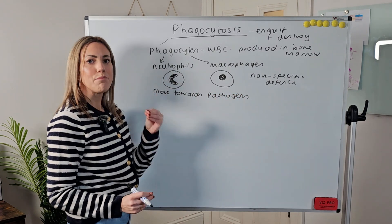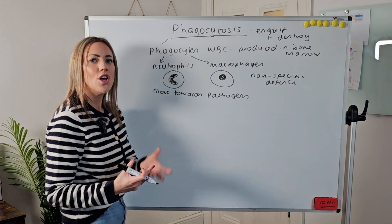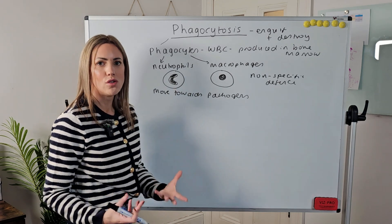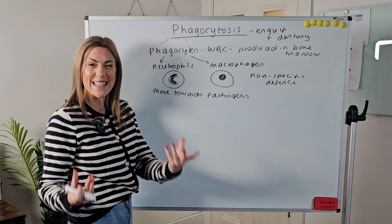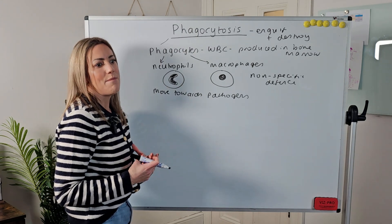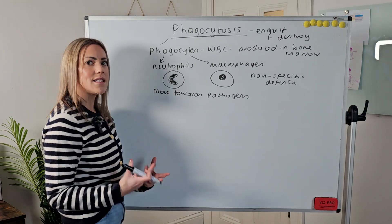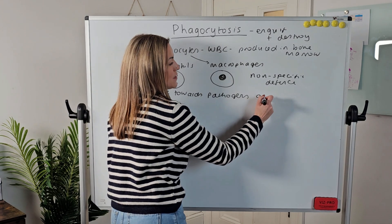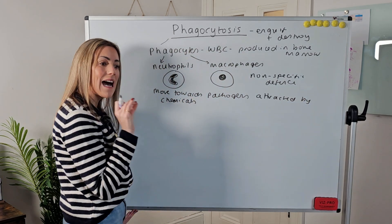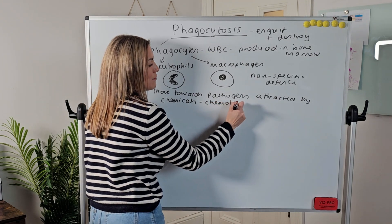The pathogens themselves might produce chemicals that attract the phagocytes to that area, or even your cells that are under attack or infected with a pathogen can produce chemicals to attract the phagocytes. For example, histamines — which you might have heard of — are produced by infected cells and can attract phagocytes over to the site of infection. That movement down a chemical gradient towards where the chemical is being produced is called chemotaxis.